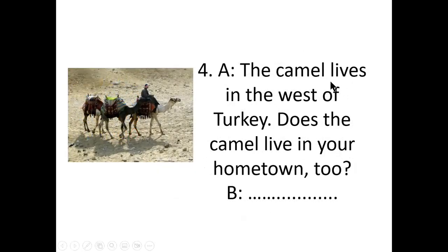Dialogue 4: The camel lives in the west of Turkey — not in the north, not in the east, not in the south — but in the west, in Aydin, in Manisa, in Turgutlu. Does the camel live in your hometown? No, the camel doesn't live in our hometown. A camel has got four legs. How many legs has an eagle got? It has got two legs. Almost all tables have got four legs — it's a fact.